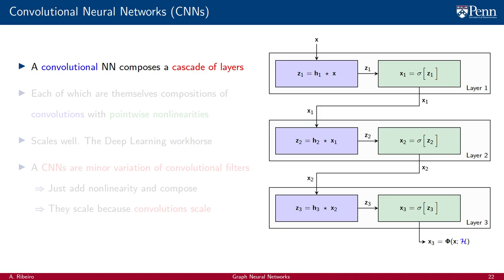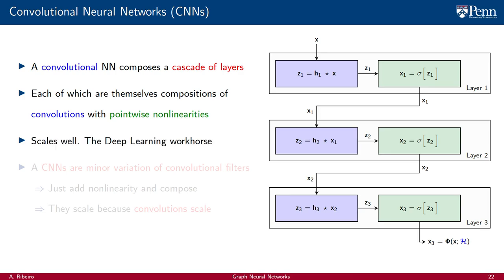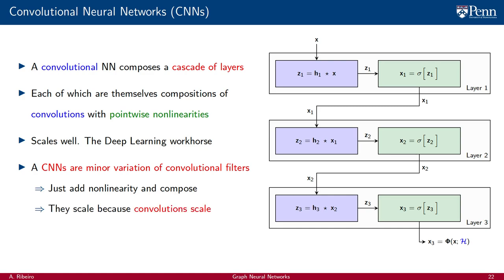A convolutional neural network is defined as a neural network in which the linear maps used at each layer are required to be convolutional filters. We end up with an architecture that composes a cascade of layers, each of which is a composition of a convolutional filter with a pointwise nonlinearity. Convolutional neural networks are the workhorse of deep learning, and they do scale well with the dimensionality of the input signal. The scalability of a CNN is expected because it is a minor variation of a convolutional filter — we just add nonlinearities and compositions — and we know that convolutions scale well. We have more than a century of evidence that this is true.